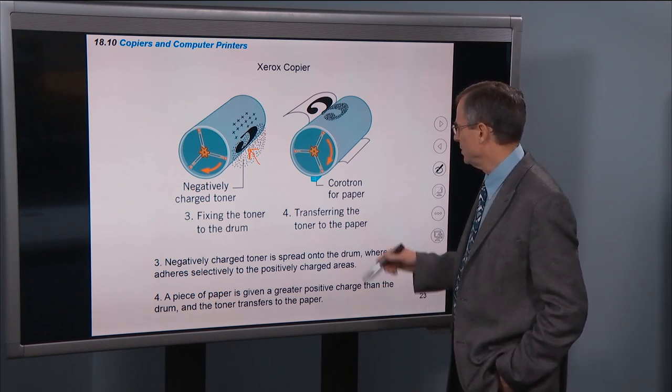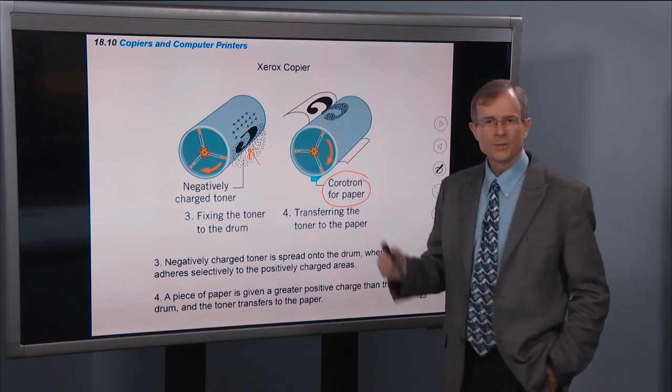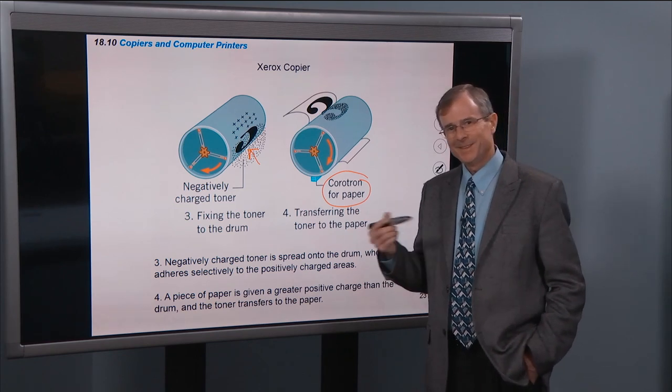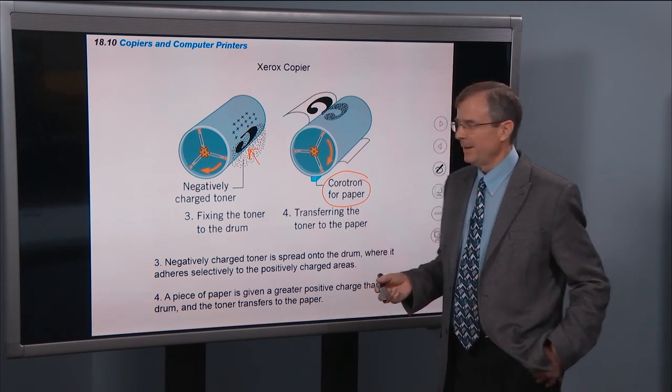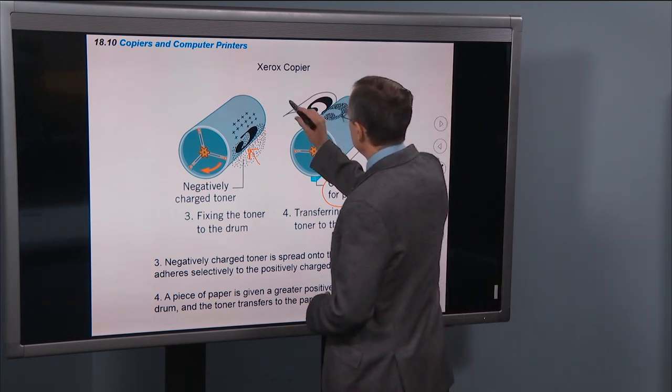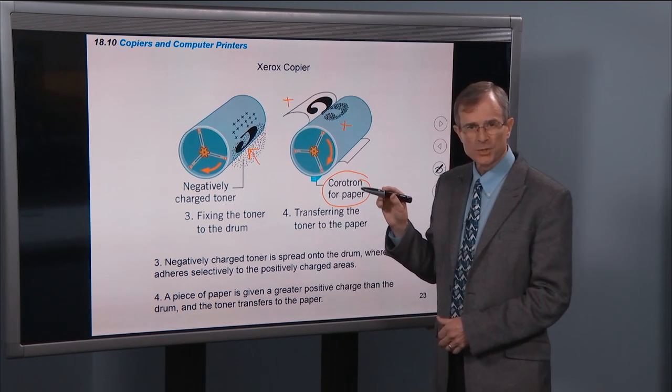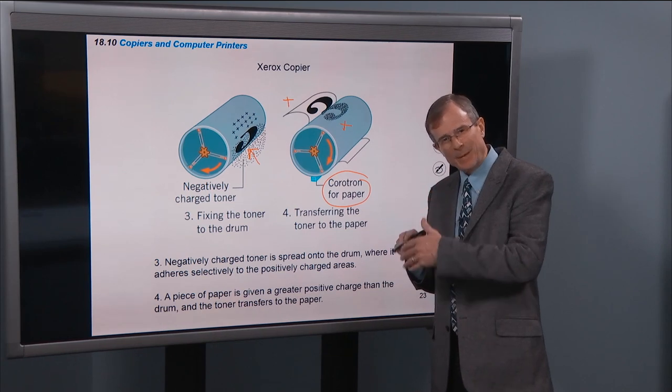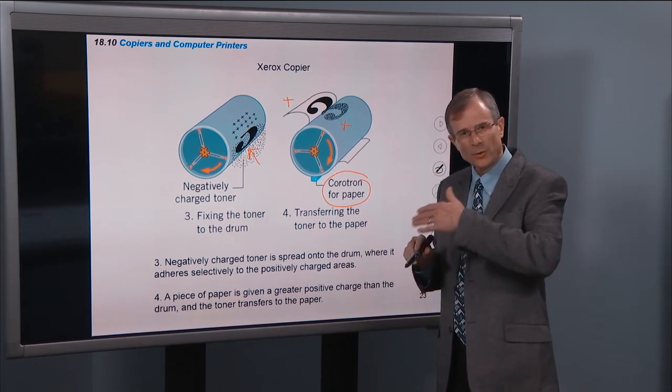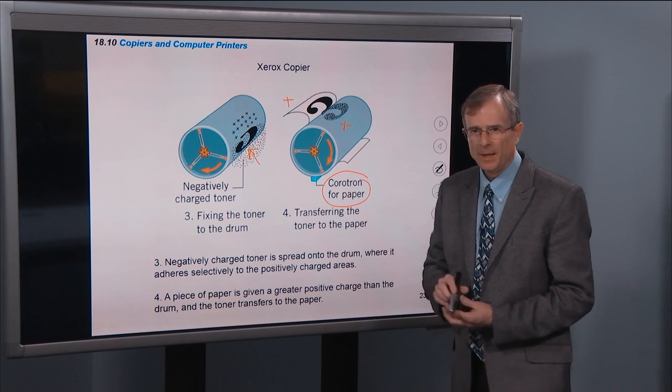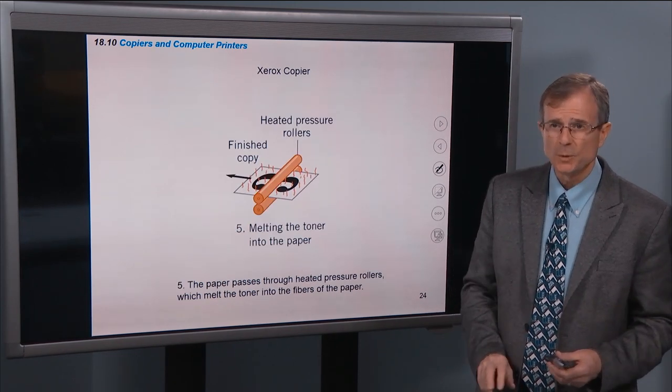So what you do is you use another corotron to charge the paper and you give it more charge than what the drum has. And so you've got a positively charged paper, a positively charged drum, you've got a negatively charged toner. And since the paper is charged more positively than the drum, the toner gets attracted to the paper and transfers to the paper.